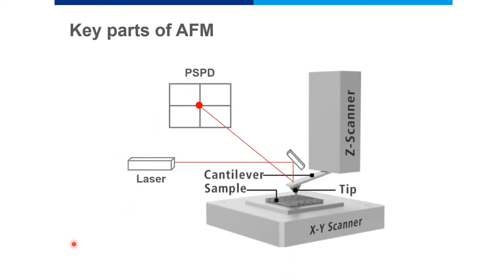The key parts include the cantilever with a tip at the bottom, a laser source that falls on the cantilever and reflects into something called a PSPD — a photosensitive position detector. There is a Z-scanner on which the cantilever is mounted, and the sample is mounted on an XY scanner. The XY scanner moves the sample in the X and Y directions, and the Z-scanner moves the cantilever in the vertical dimension.